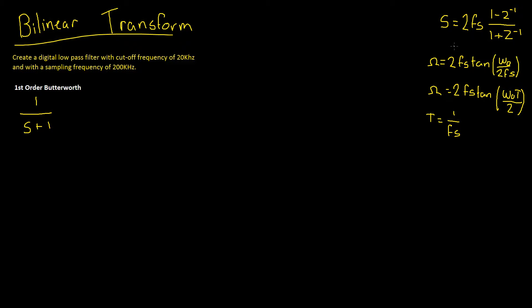Now when we perform the bilinear transform, there's some warping that occurs thus we have to pre-warp our filter prior to performing the transform. That pre-warping is simply our omega value here, which is 2FS tan of omega 0 divided by 2FS, but you also might see this written as 2FS times tan of omega 0 T divided by 2. And remember that's the same thing just because T is equal to 1 over FS.